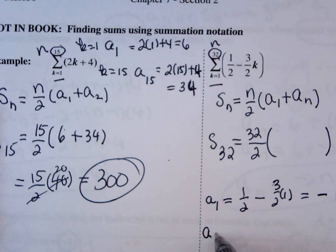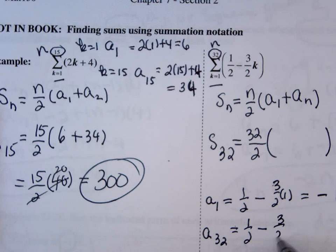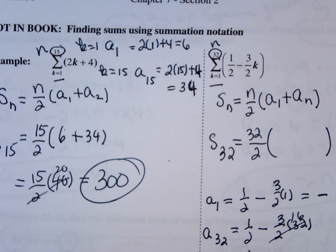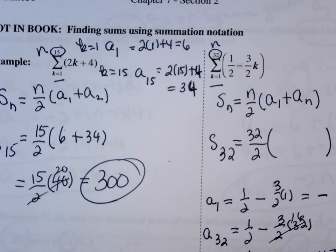And a sub 32 is 1 half minus 3 halves times 32, and that's some work. So this is 1 half minus, this is going to be 16. And then 3 times 16 is 48.